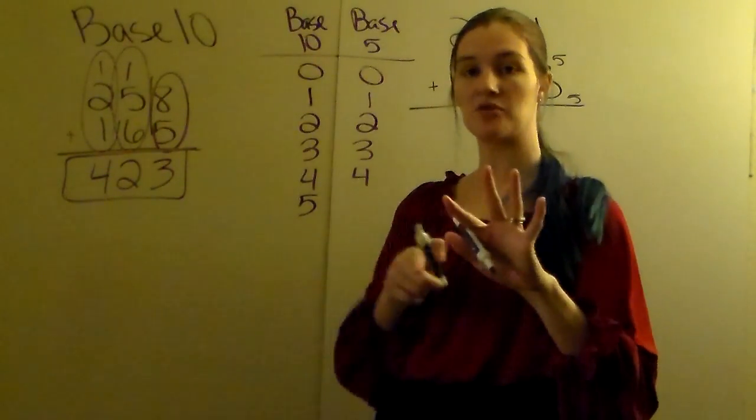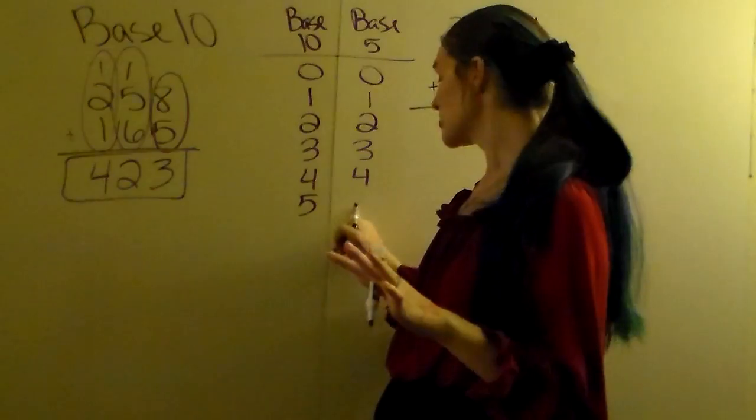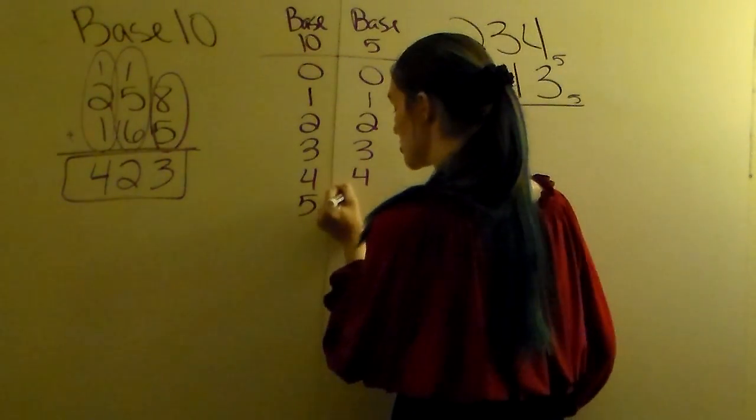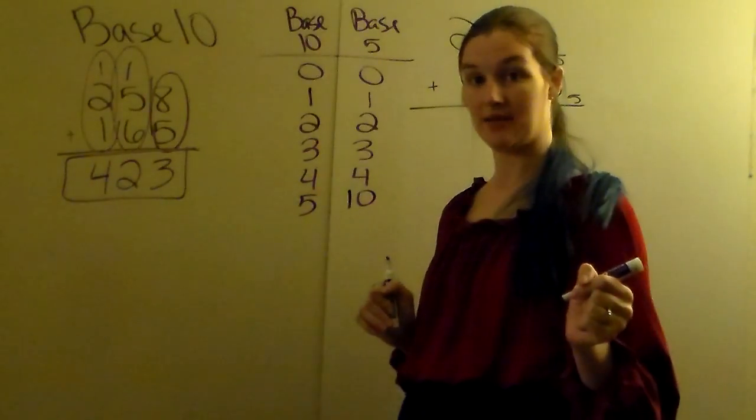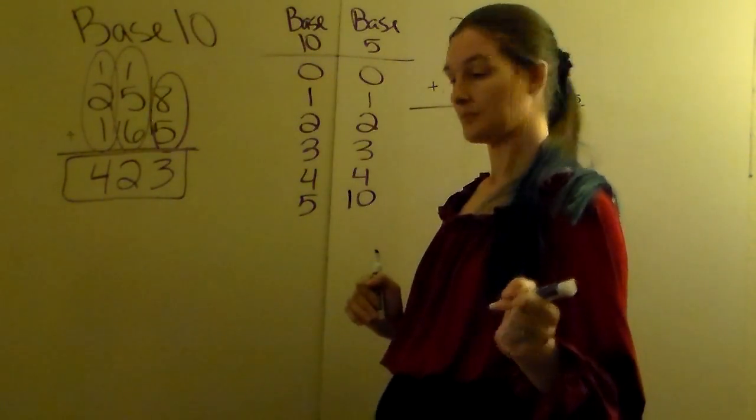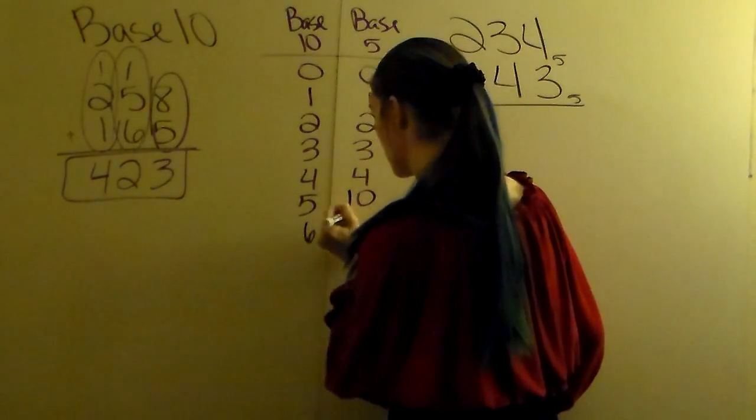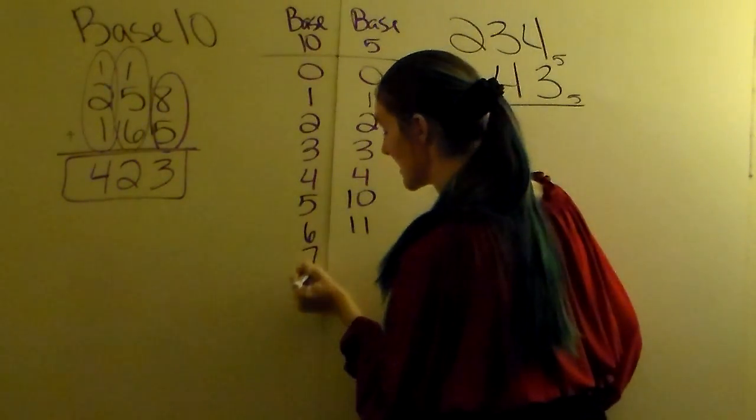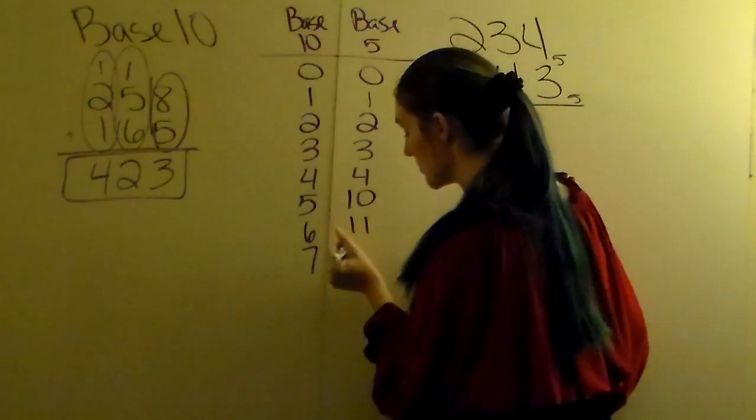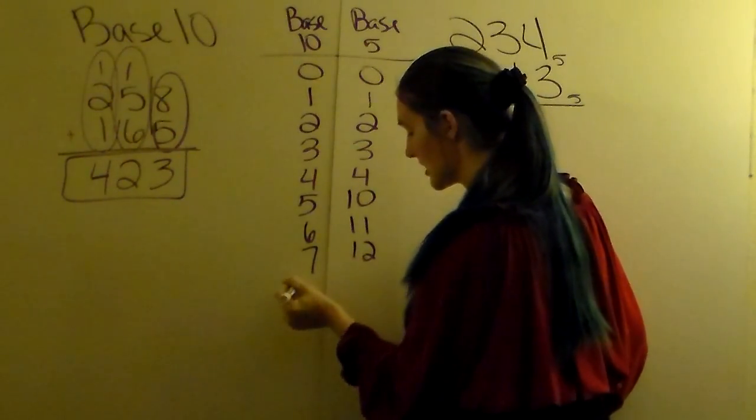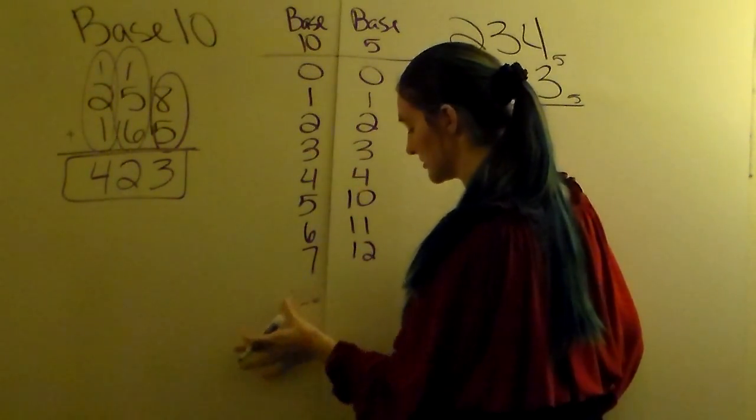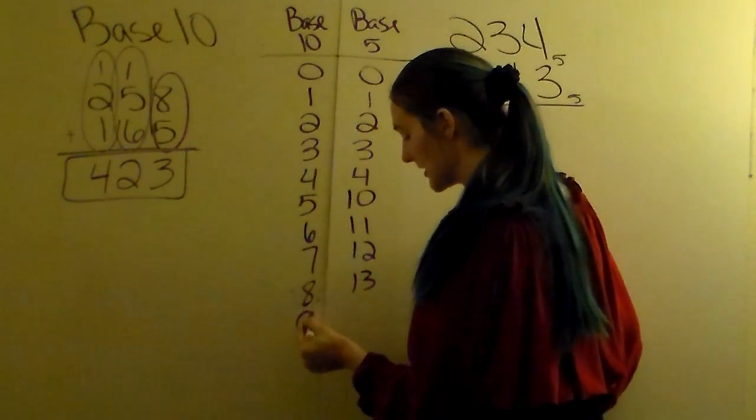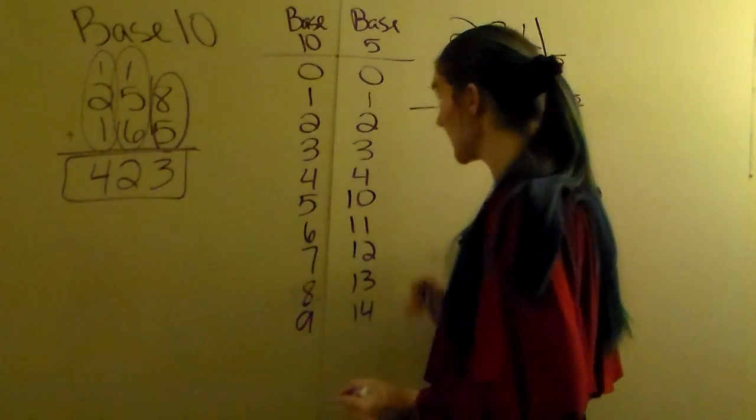So you cannot have a 5. You hit the base, you're going to start combining and make 10. You hit 6, it's going to be your 11. The 7th number in base 10 would be 12. The 8th number will be 13. The 9th number is 14 in base 5.